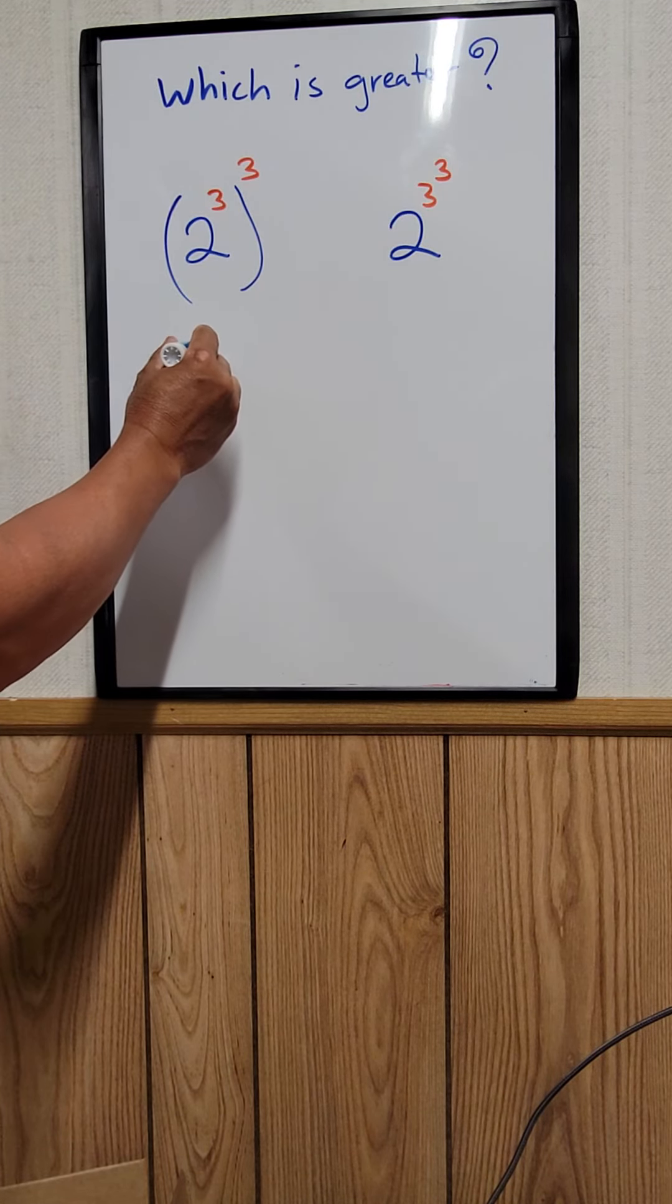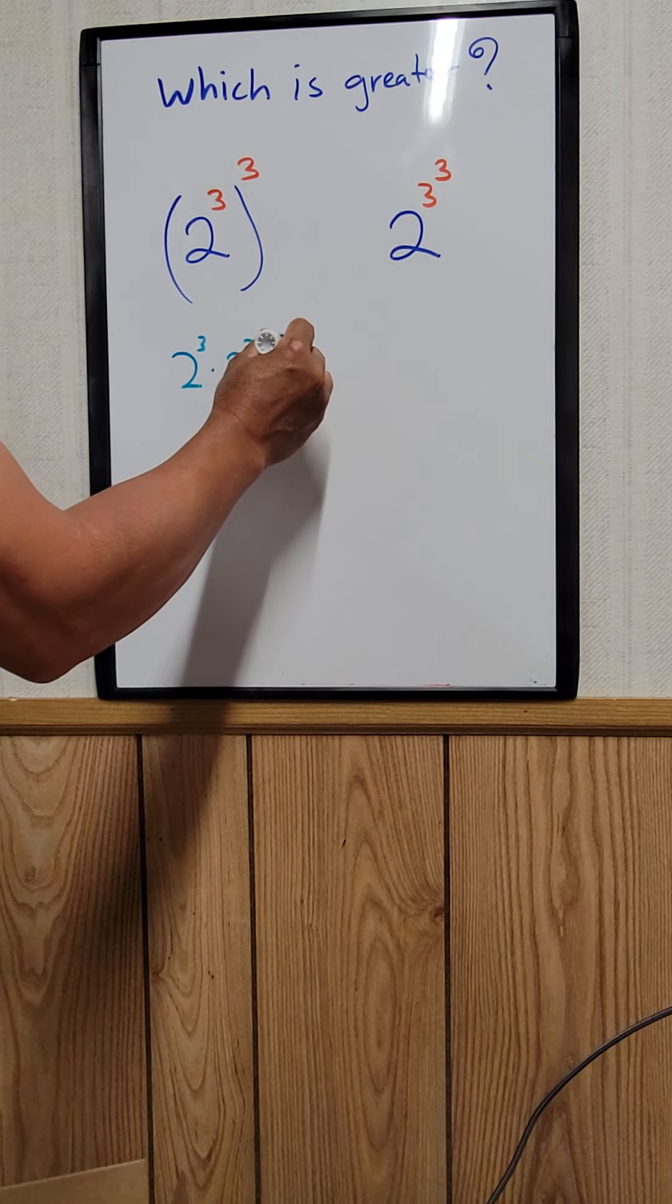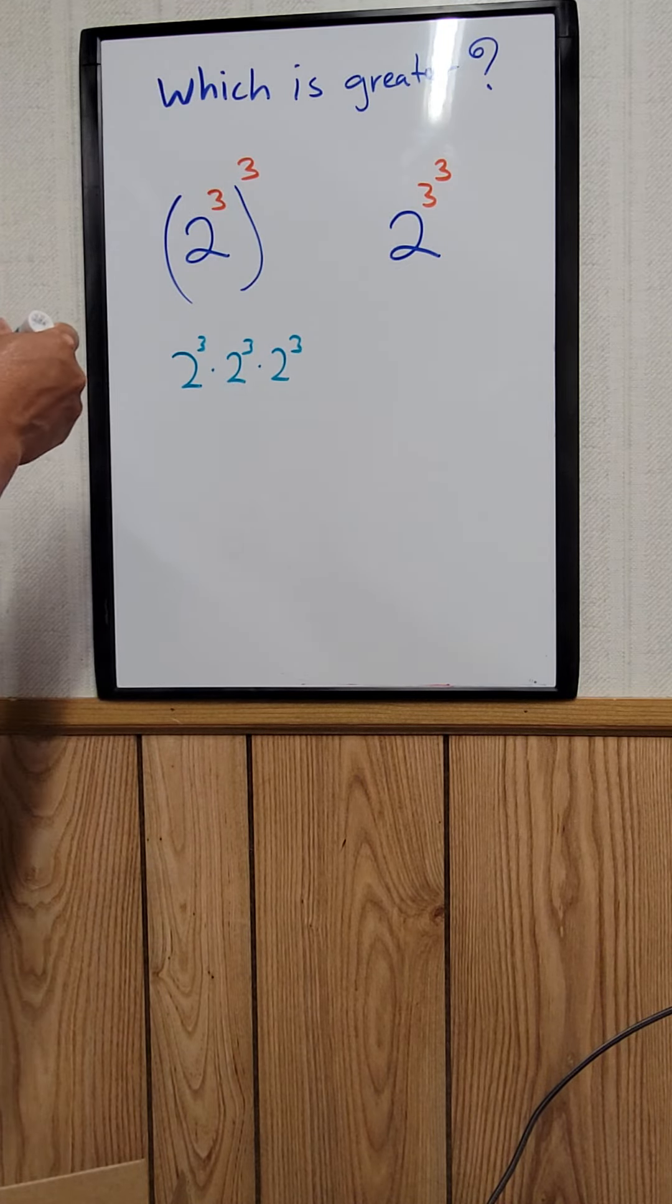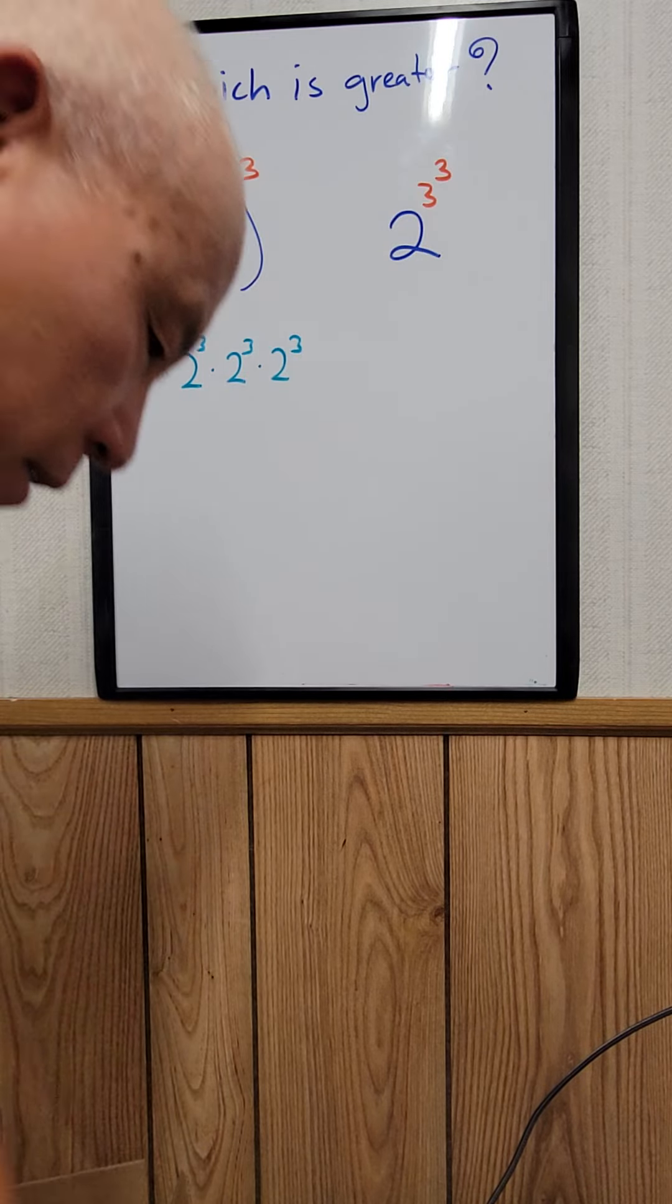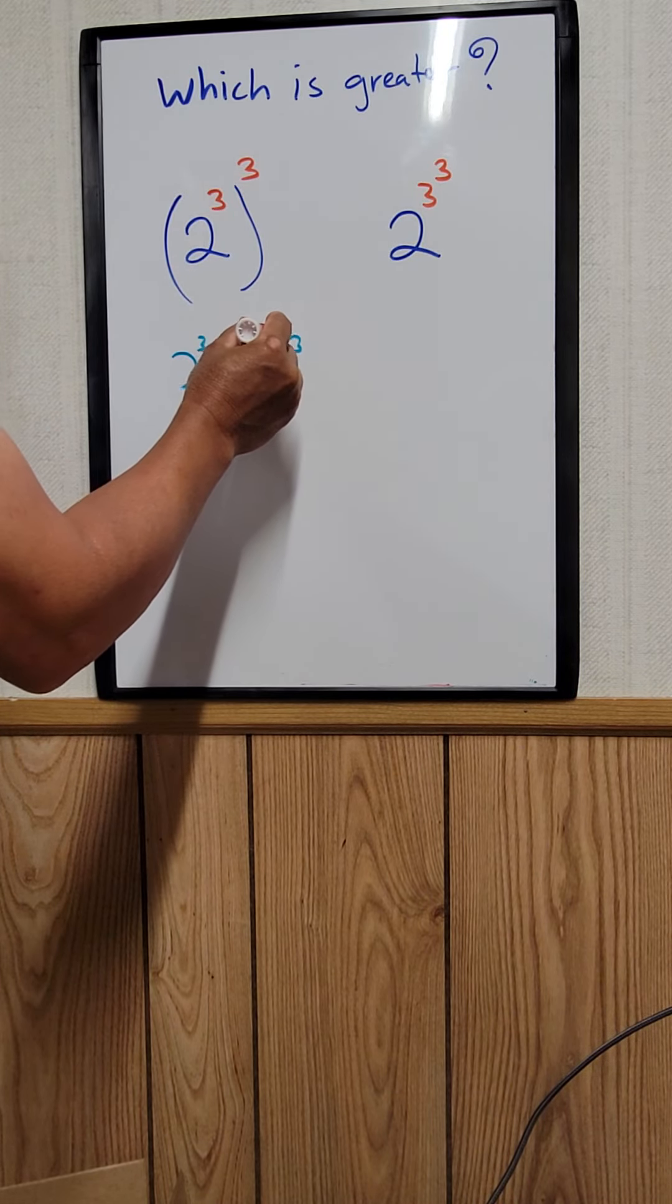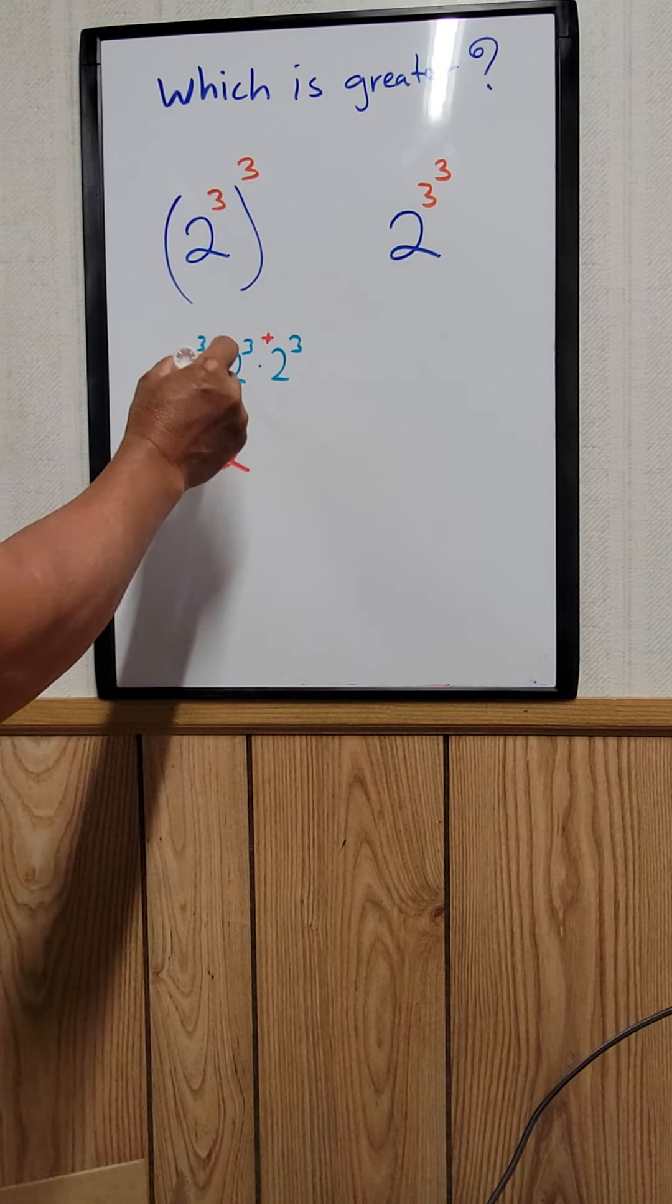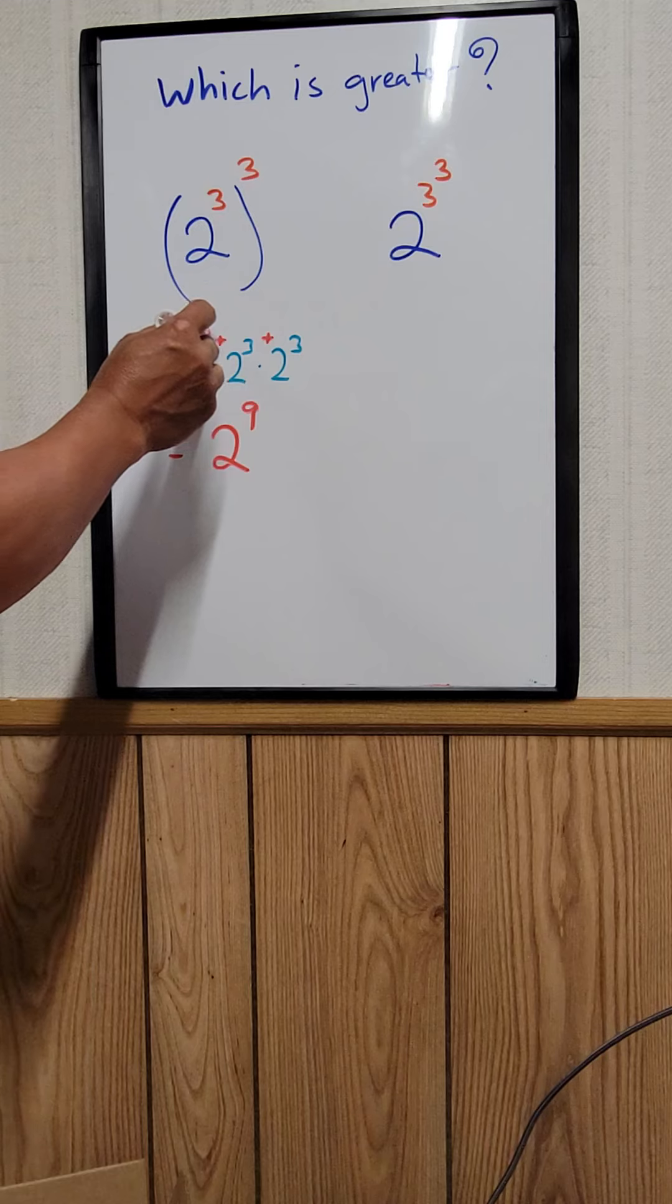So basically just add up the powers right here. So you decide that the power, so that's equal to 2 to the ninth power. 3 plus 3 plus 3, or it's the same thing as saying 3 times 3 is 9.